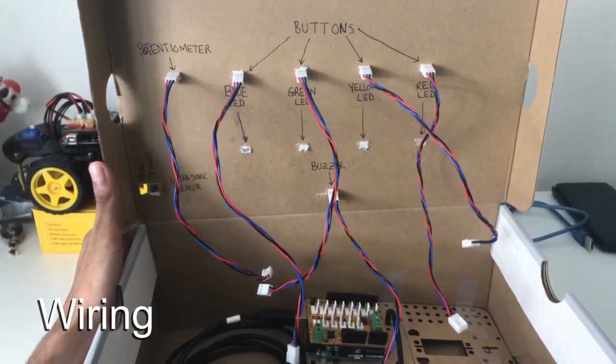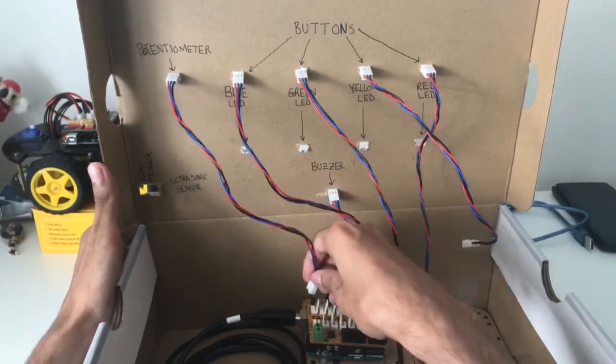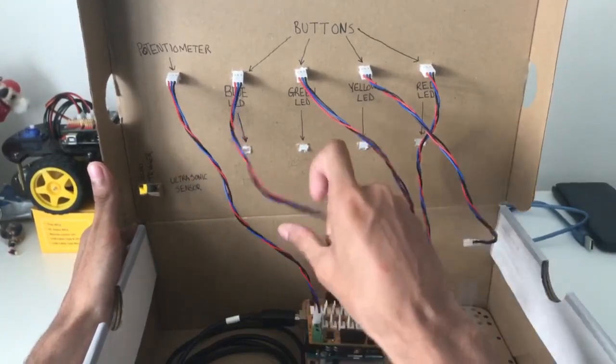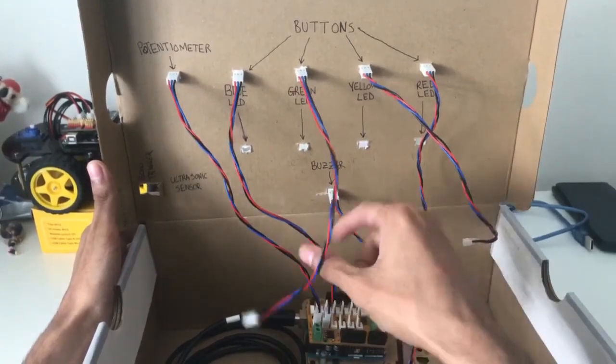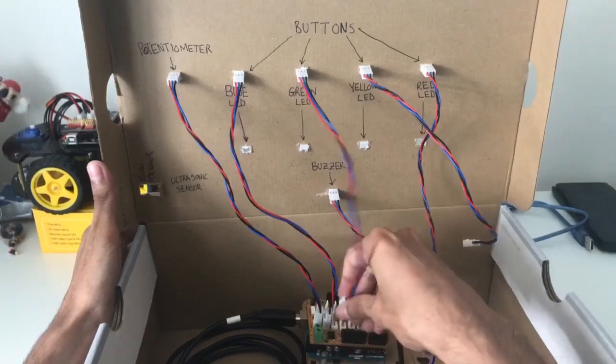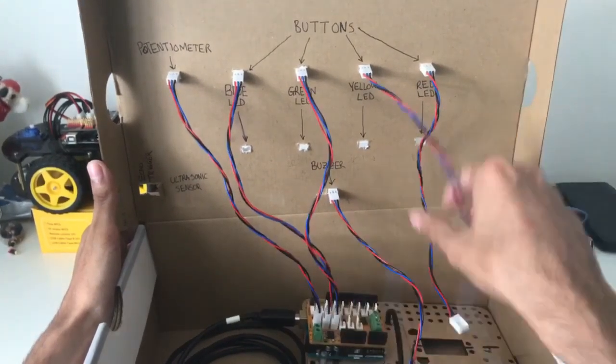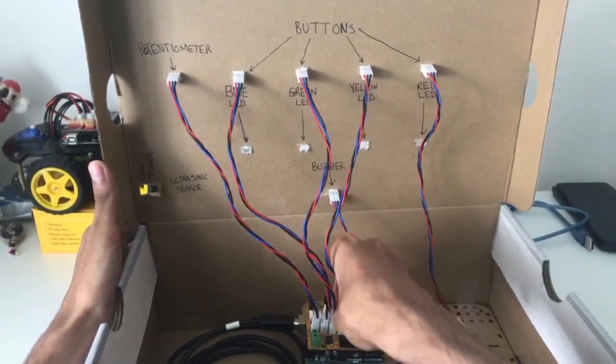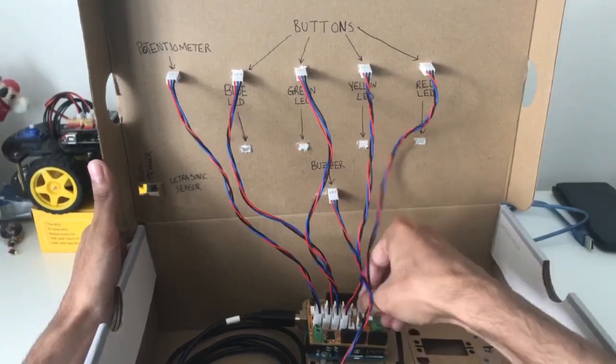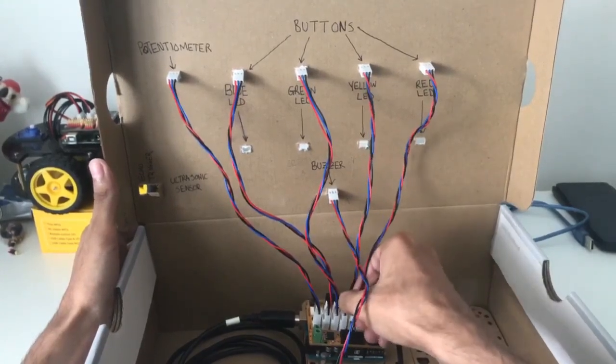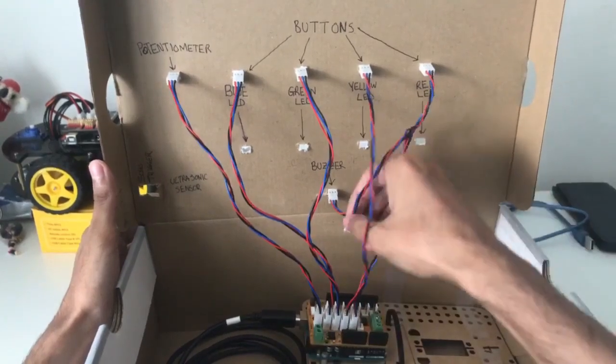I'll now quickly go ahead and show you how each wire is connected to the board. The potentiometer will go to input 0, the blue button will go to input 1, the green button will go to input 2, the yellow button will go to input 3, and the red button will go to input 4. Finally, the buzzer will go to output 0.